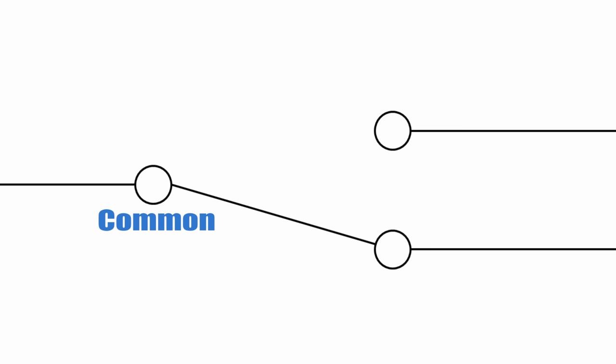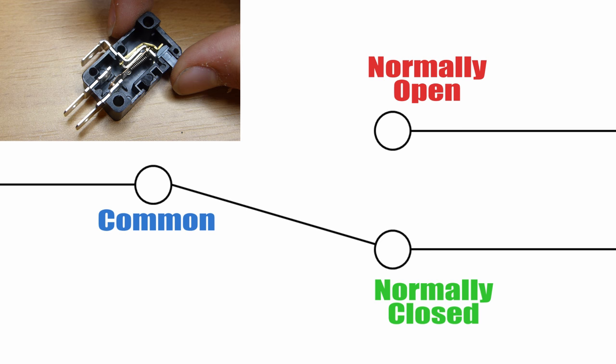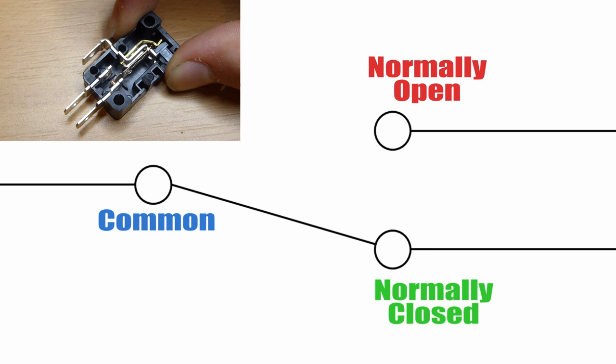Then, these two here are called the normally open and the normally closed. When the switch is in its resting position, the normally closed is connected to the common. When pressed, the common connects to the normally open, but springs back after it is released.